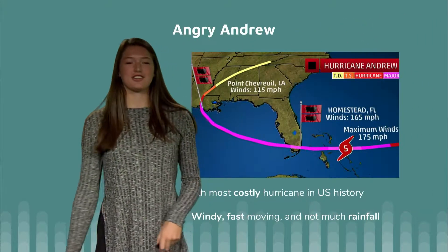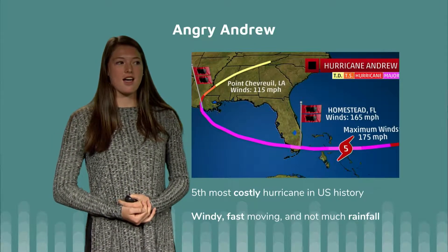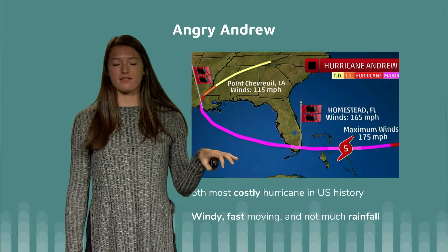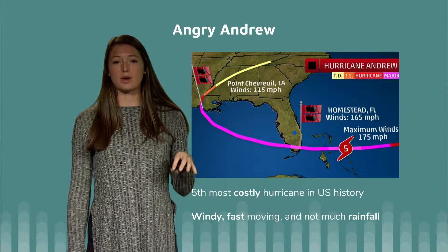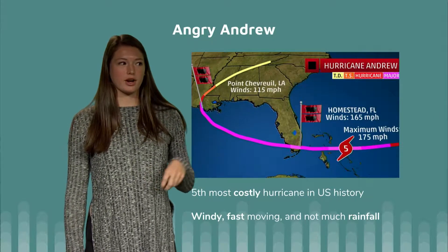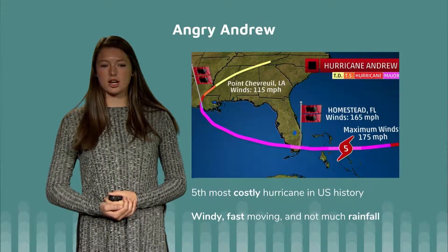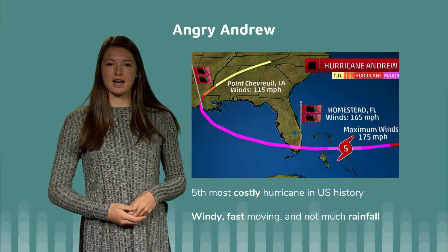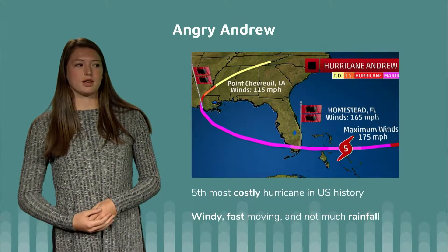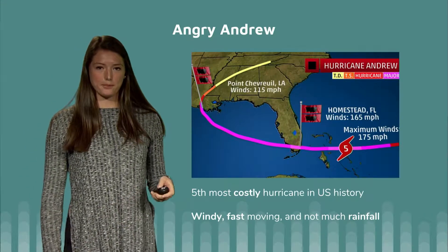Hurricane Andrew was best known for its really high winds. The maximum winds were around 175, reaching 177 at one point when it was about to hit Florida. It was the first most costly hurricane at its time, but now it's the fifth. It was very fast moving, but there was not a lot of rainfall.